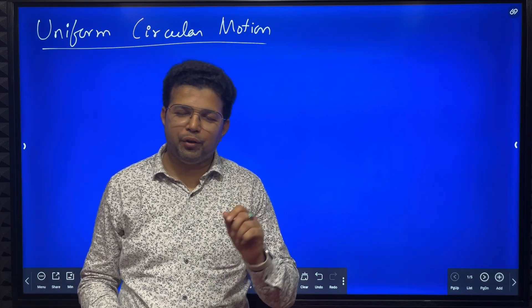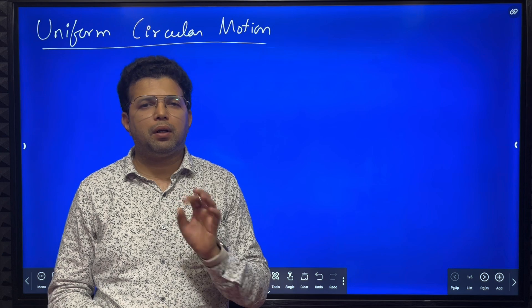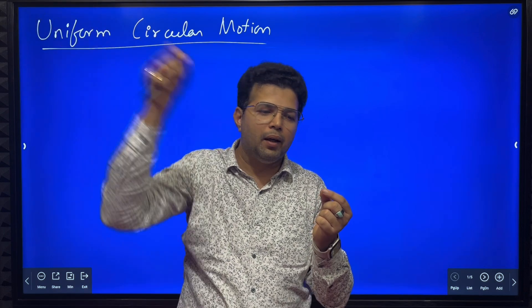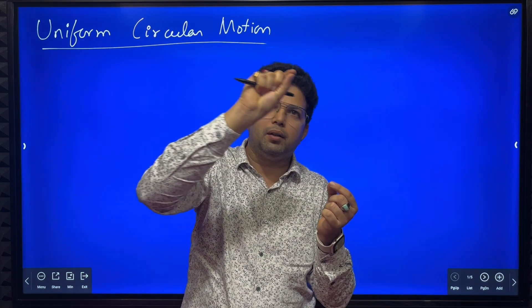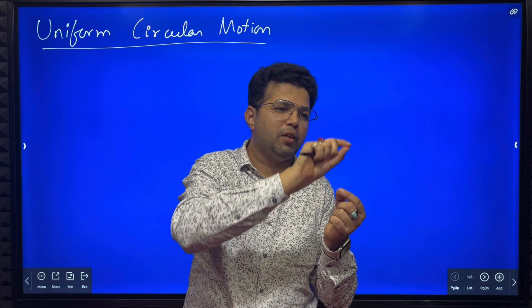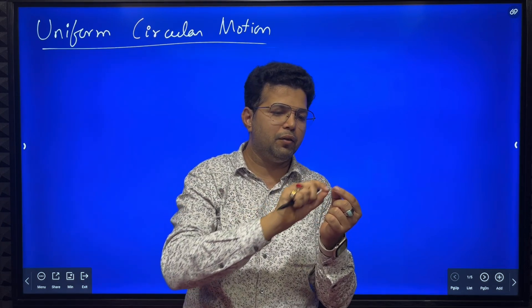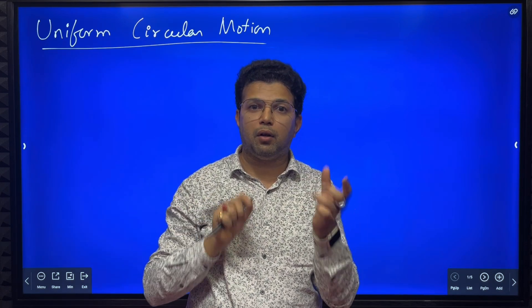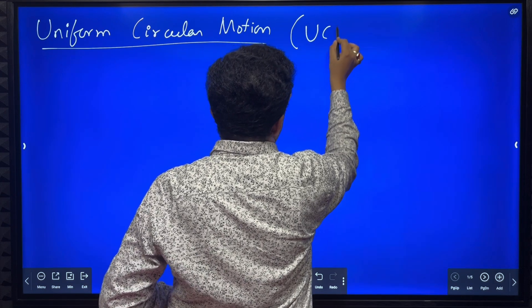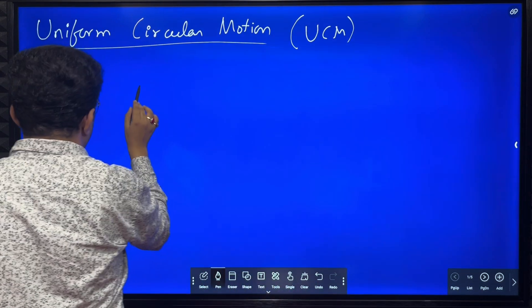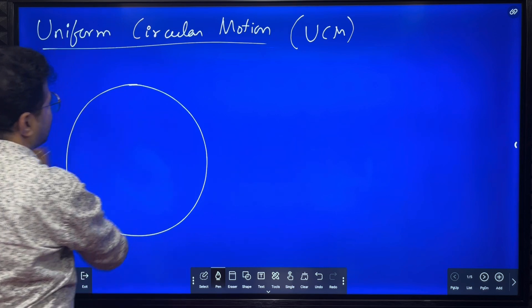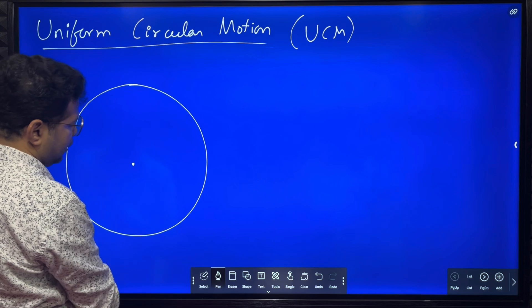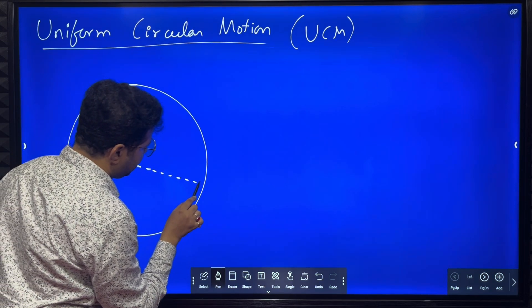Hello dear students. In this small video we are going to learn some simple concepts and formulae of uniform circular motion. First we have to see what is uniform circular motion. If a body is moving in a circular path with a constant speed, then we say that the body is in uniform circular motion.